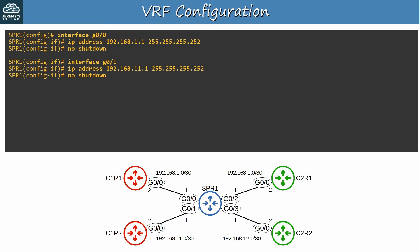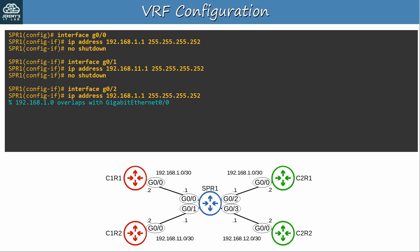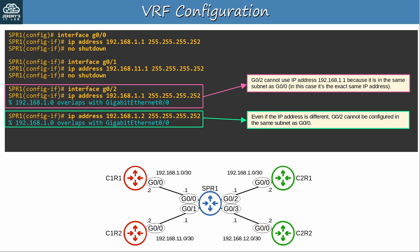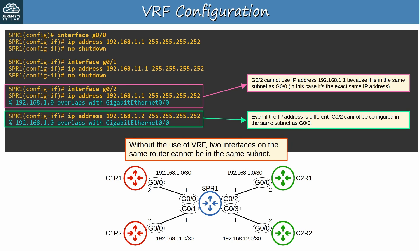I configured SPR1's G0/0 and G0/1, both connected to customer 1's routers — no problems yet. But when I try to configure G0/2, I get an error message: 192.168.1.0 overlaps with G0/0. G0/2 cannot use IP address 192.168.1.1 because it is in the same subnet as G0/0. Even if the IP address is different — for example 192.168.1.2 — it still won't work. Without the use of VRF, two interfaces on the same router cannot be in the same subnet.